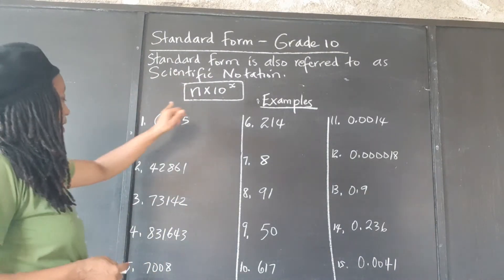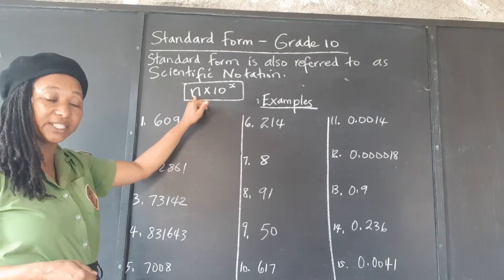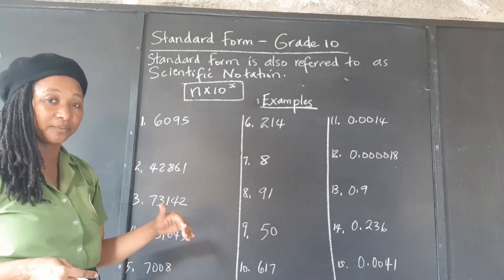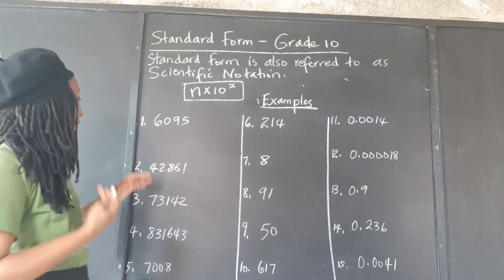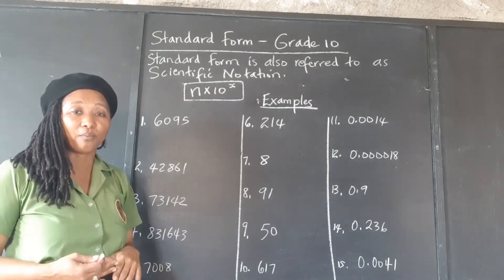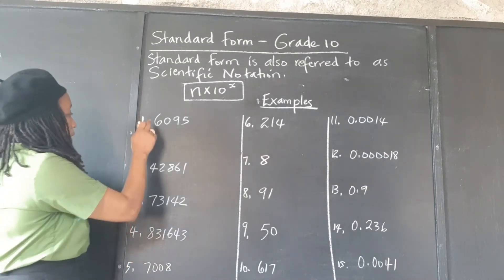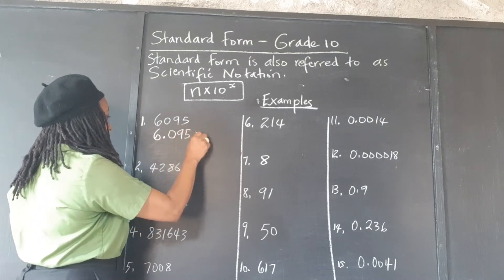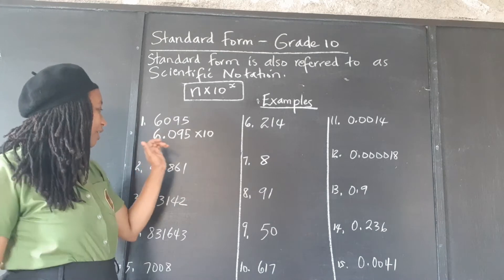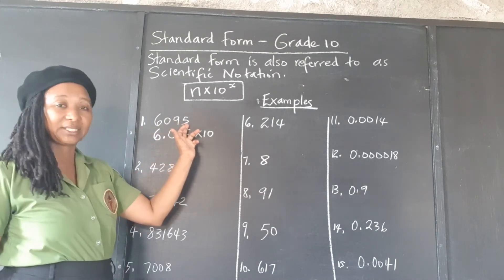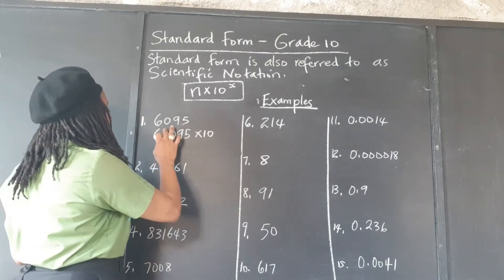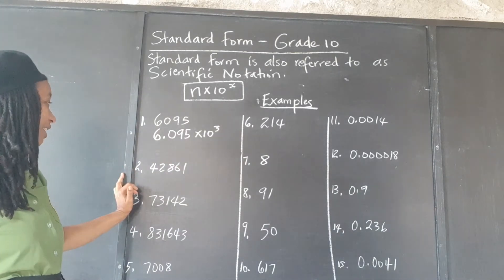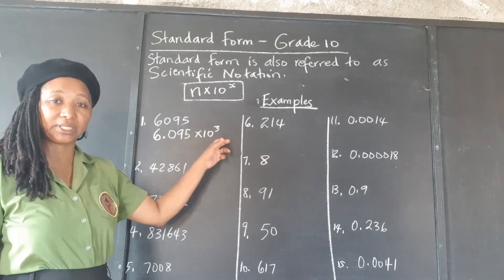So we only want one digit in the ones place, or to the left of the decimal point. Everything else will be expressed as a decimal, to the right of the decimal point. And then we times it by 10 and however many places we'd have to move back. So we only need the 6 here — all of these become decimals — and now we ask how many places would we need to move back to the right to get this back to 6,000? We'd have to move one, two, three places, so we write that as 10 to the third power: 6.095 times 10 cubed, 10 to the third power.